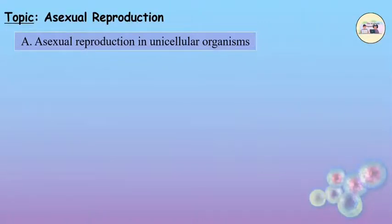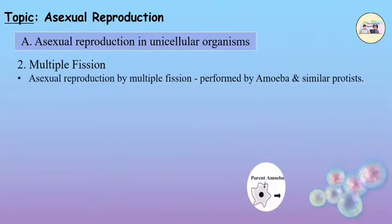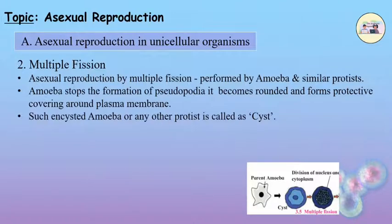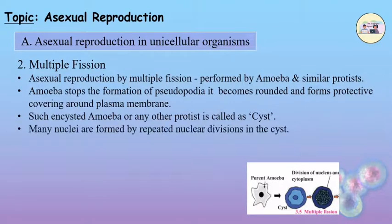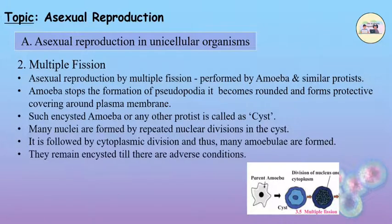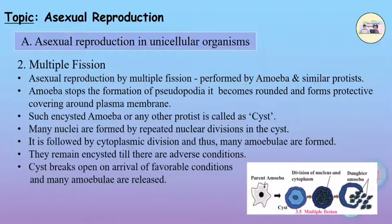2. Multiple Fission. Asexual reproduction by multiple fission is performed by amoeba and other similar protists. Amoeba stops the formation of pseudopodia, becomes rounded, and forms a protective covering around the plasma membrane. Such an encysted amoeba or any other protist is called a cyst. Many nuclei are formed by repeated nuclear divisions in the cyst, followed by cytoplasmic division, and thus many amoeba are formed. They remain encysted till there are adverse conditions and break open on arrival of favorable conditions, releasing many amoeba.